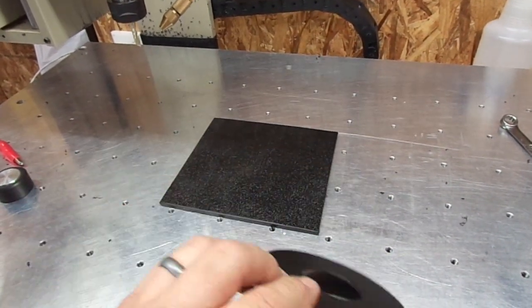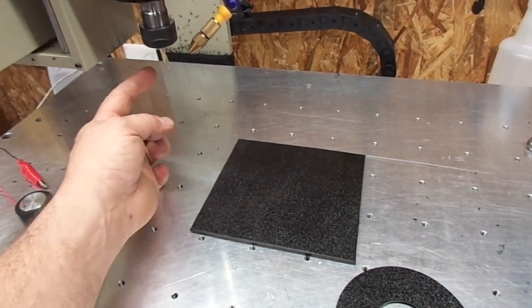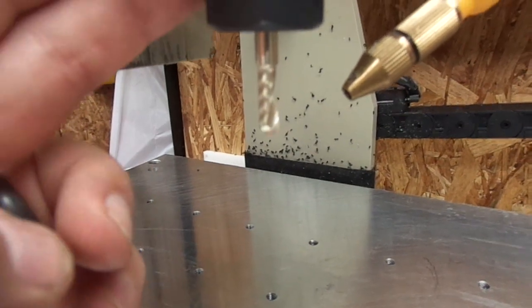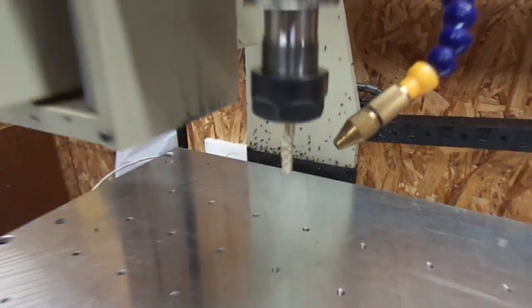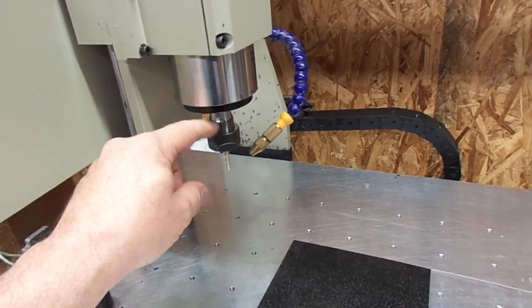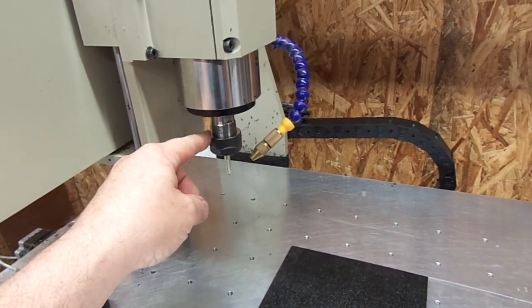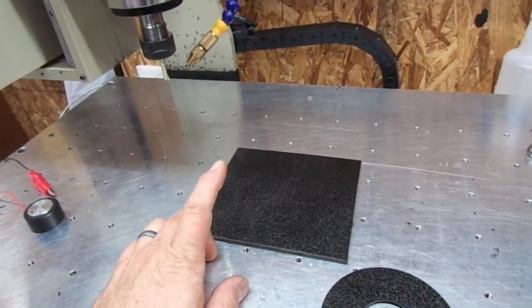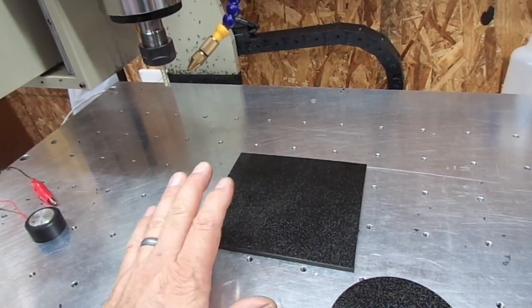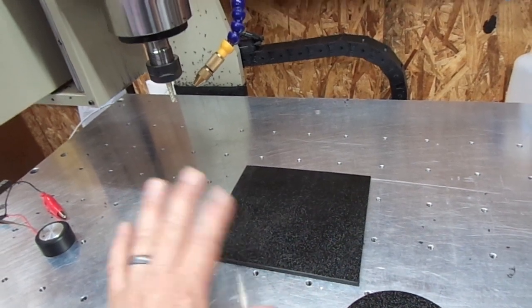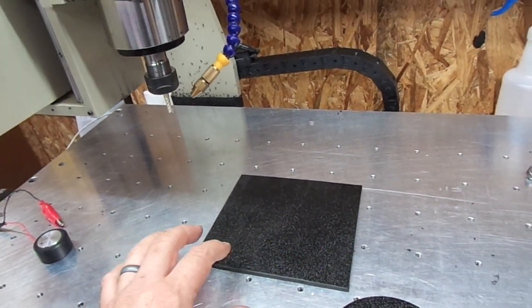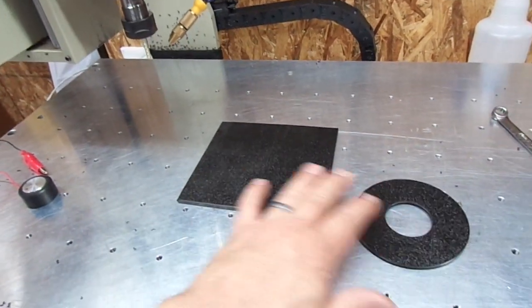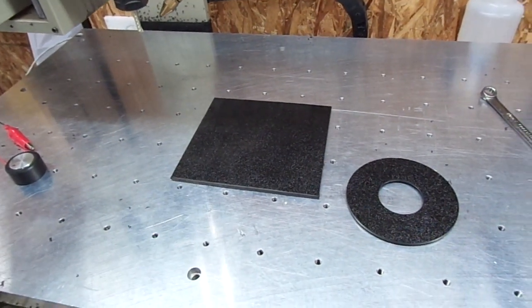Today we're using the Carbide 3D one flute quarter inch end mill. We're going to be turning about 12 to 15 thousand RPM, cutting feed rate will be 100 inches a minute, the lead-in feed rate will probably be about 60 to 80 inches a minute. Let me get everything set up and we'll cut some ABS.